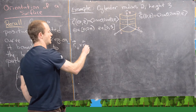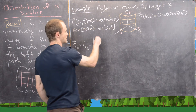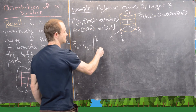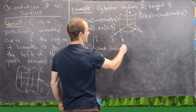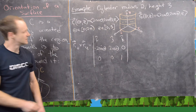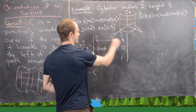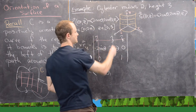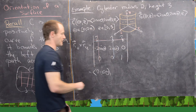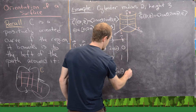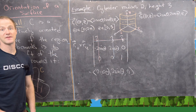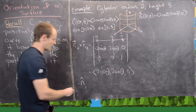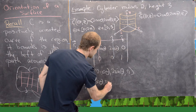R1_theta cross R1_z is the determinant with i, j, k in the first row; then (-2 sin theta, 2 cos theta, 0) for the theta partial; and (0, 0, 1) for the z partial. In the first component we get 2 cos theta; in the second component, we get 2 sin theta; and in the last component, 0. The magnitude of this vector is easily seen to be 2, so dividing by 2 gives us the unit normal n1-hat = (cos theta, sin theta, 0).